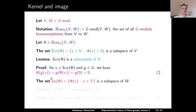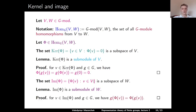Similarly, consider Im(φ), the set of all vectors in W of the form φ(v) for v ∈ V. This set is a subspace of W. Claim: this set is actually a submodule of W. Proof: for an element φ(v) ∈ Im(φ) and g ∈ G, applying g to φ(v) and using that φ is a G-module homomorphism, we can commute g and φ to get φ(g·v), which is manifestly an element in Im(φ).